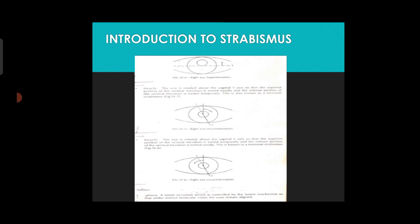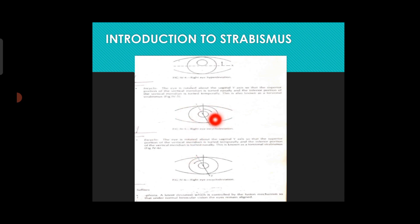There is also incyclophoria and excyclophoria. In incyclophoria, the right eye rotates nasally — it rotates inward. In excyclodeviation, the eye rotates toward the temporal side. So in incyclodeviation the eyeball rotates nasally, and in excyclodeviation it rotates toward the temporal side.